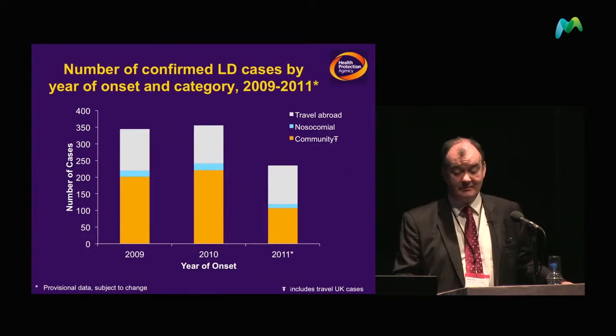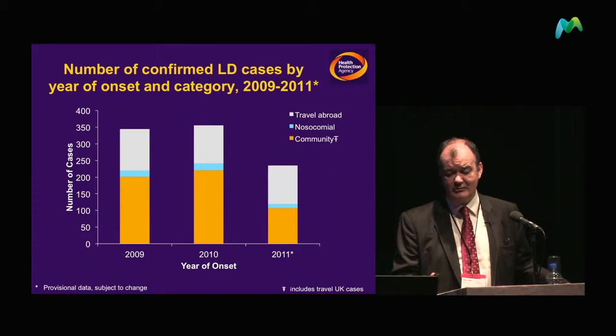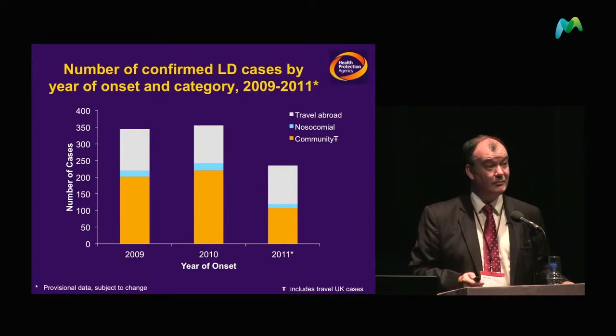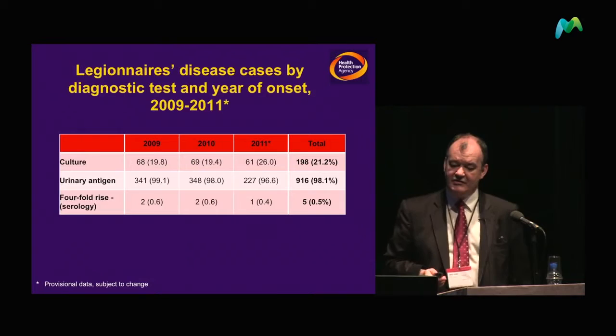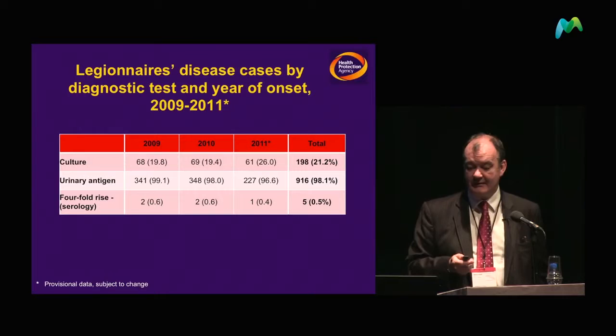In 2011 we saw this marked decrease. The travel-abroad cases really didn't change — we saw travel-associated cases go from just under 40% to about 53% of all cases. The biggest reduction was in community-acquired cases in 2011. Culture, which is a key element, improved to 26% of cases in 2011, and I hope that continues.